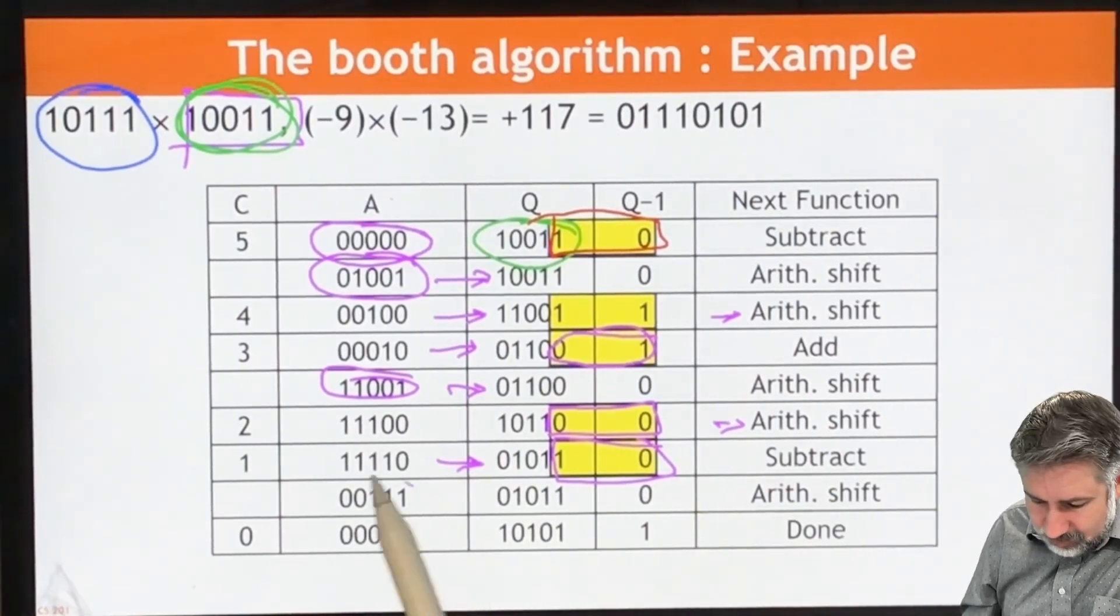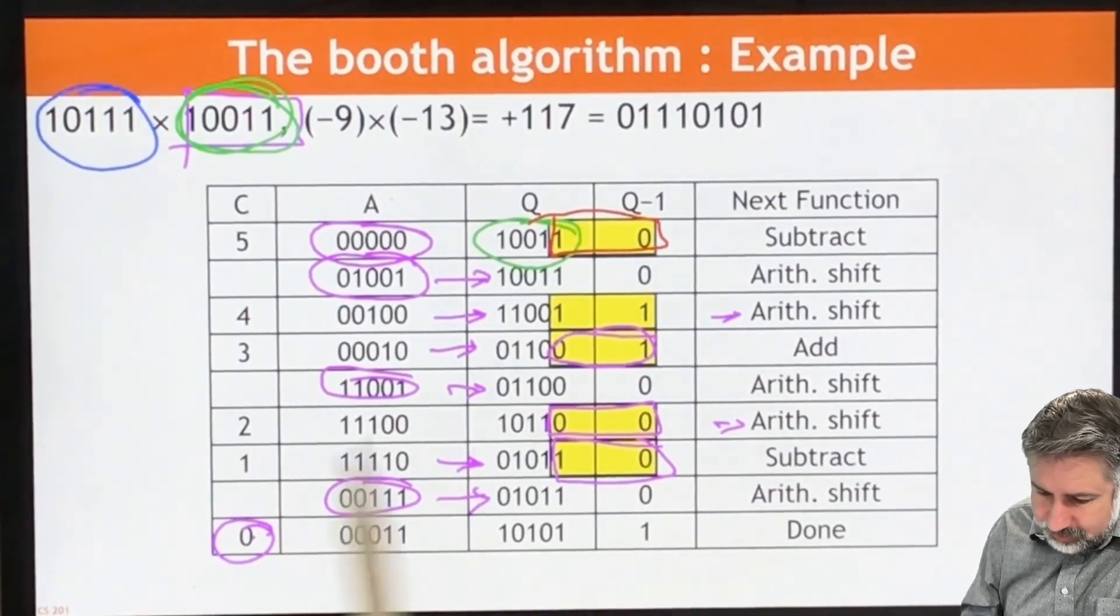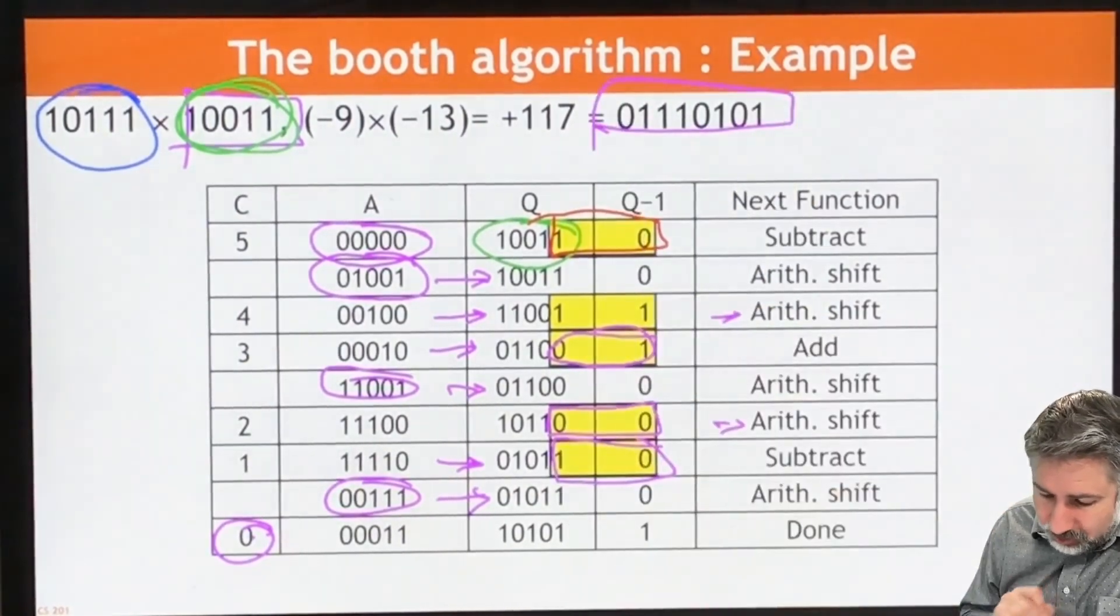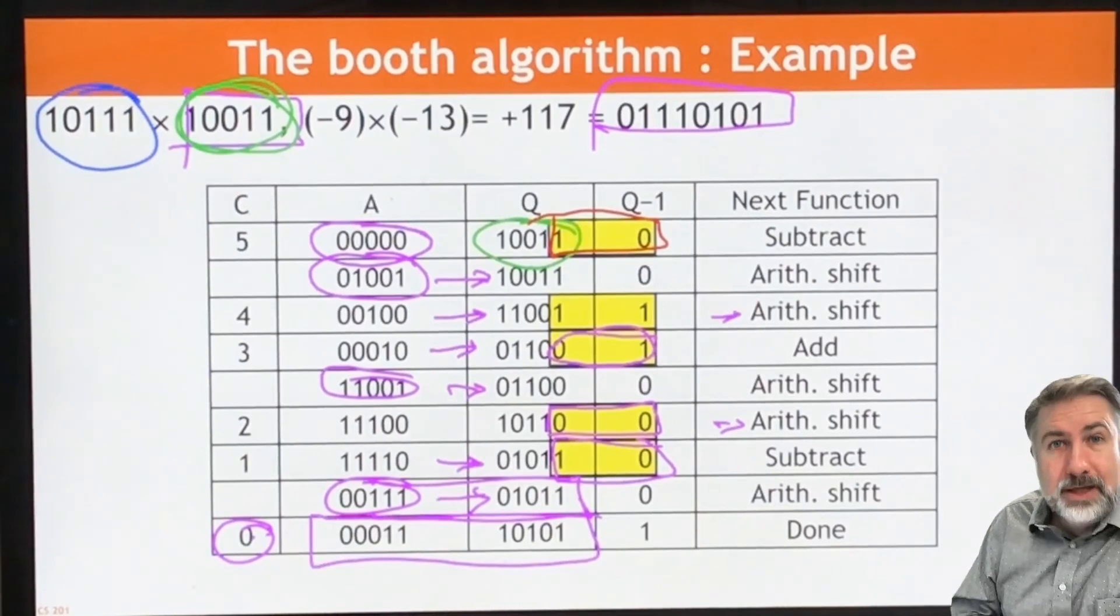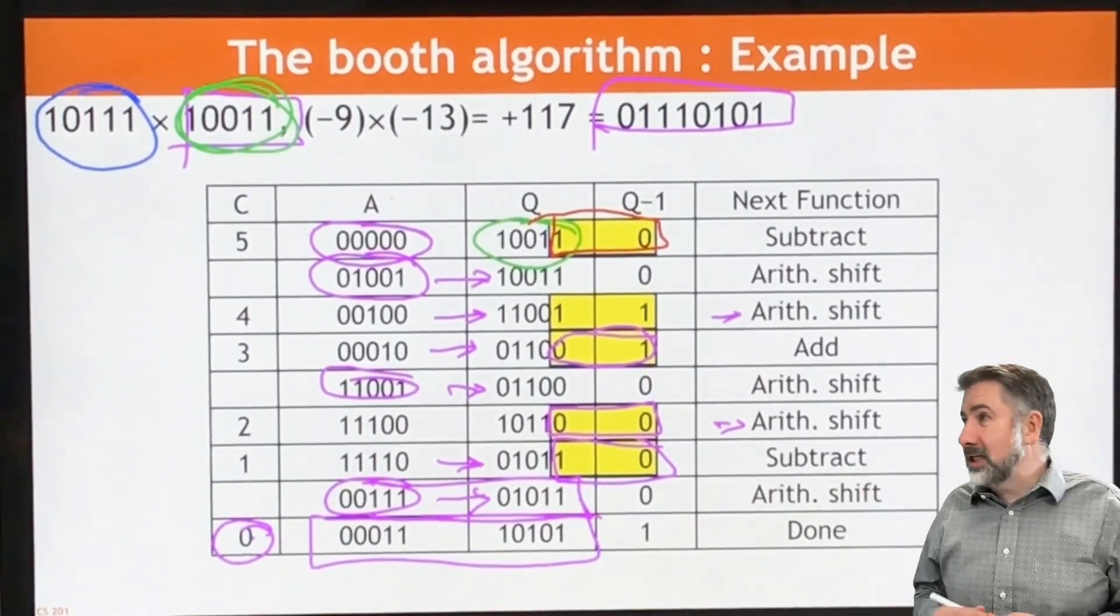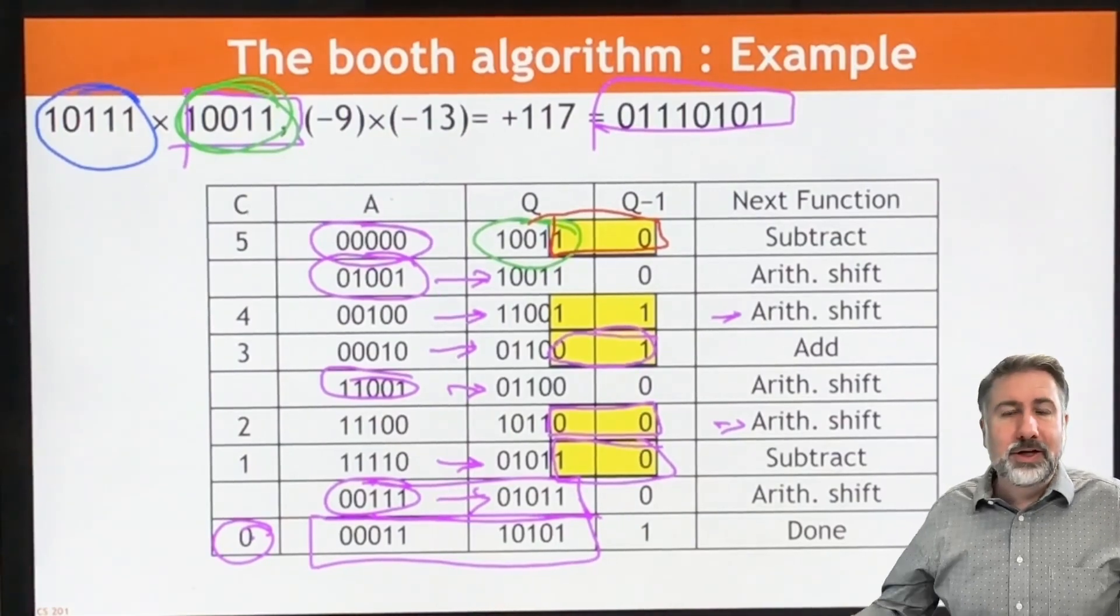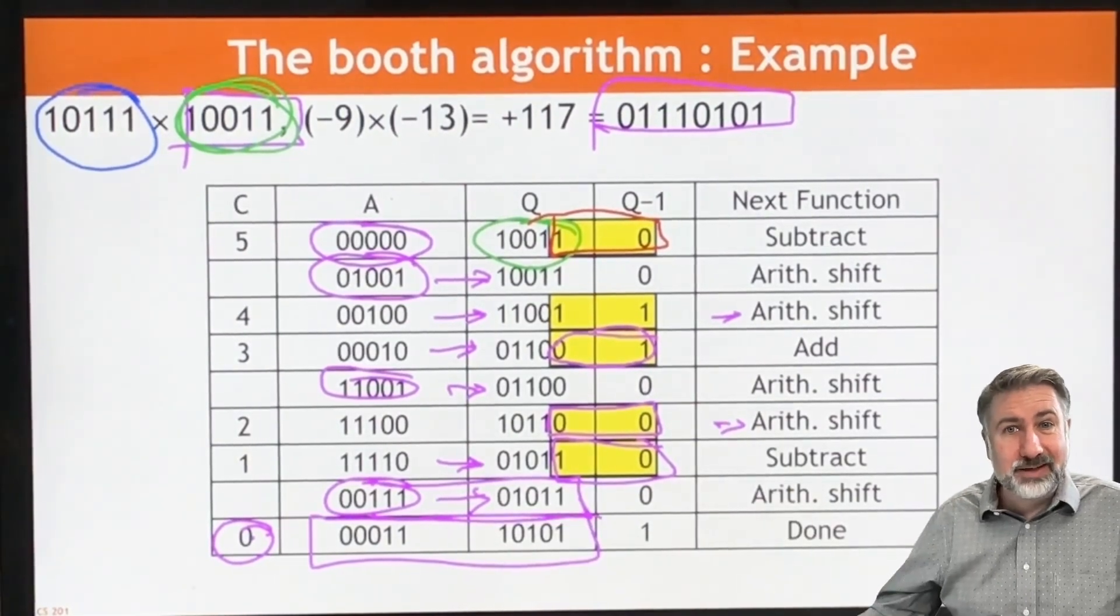And so we subtract. We do our final shift and C equals zero tells us we're done. And we get this result, positive 117, which is what we expect to have. Positive 117. So this is the Booth algorithm. We're going to shift and negate, shift and add. And it's a really clever algorithm that gives us a very powerful way to perform multiplication on signed numbers.